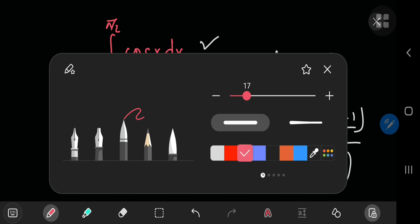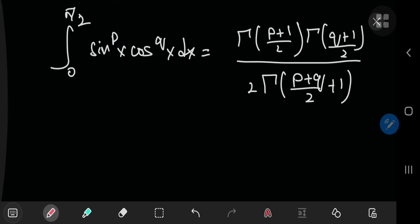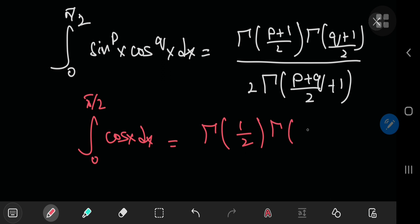So if we plug in all of this information into our reduction formula, we see that the integral from 0 to pi by 2 of the cosine of x with respect to x equals the gamma function of 1 by 2 times gamma 1 divided by twice gamma 3 by 2.